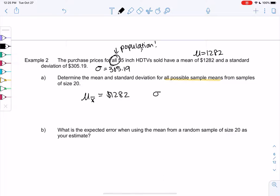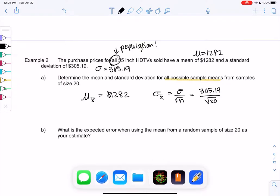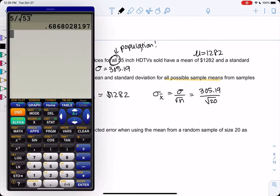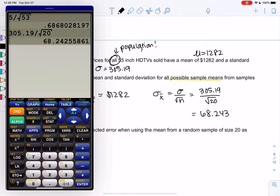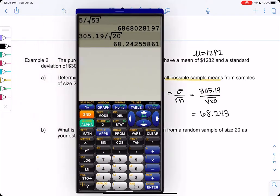And then the standard deviation of x bar, sigma of x bar, will be the original sigma over square root n, which is 305.19 over square root 20. And we always will get a smaller standard deviation. It's less spread out. We get 68.243. So we have five digits.